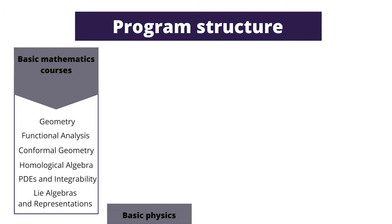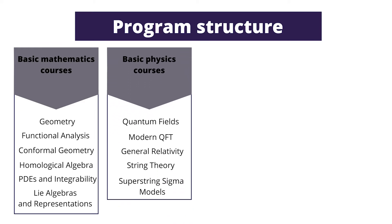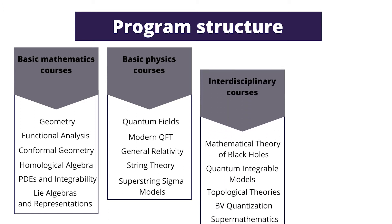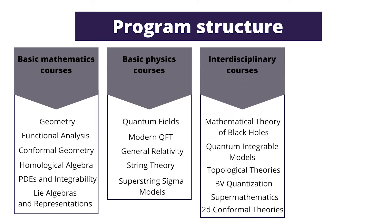The second group consists of basic physics courses, including quantum field theory, gravity, and introductory courses on string theory. The third group contains more advanced and interdisciplinary courses devoted to subjects studied from both mathematical and physical perspectives simultaneously.